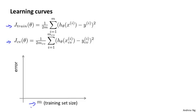m is usually a constant — like maybe I just have a hundred training examples. But what I'm going to do is artificially reduce my training set size. So I deliberately limit myself to using only, say, 10 or 20 or 30 or 40 training examples, and plot what the training error is and what the cross-validation error is for these smaller training set sizes.